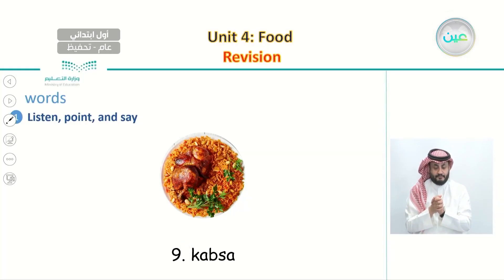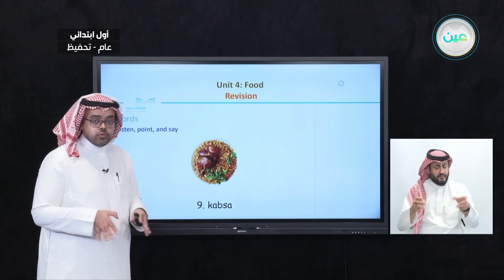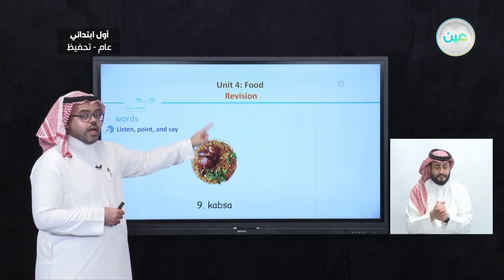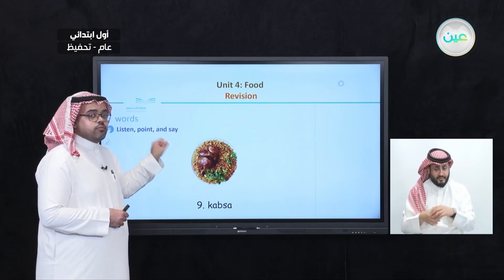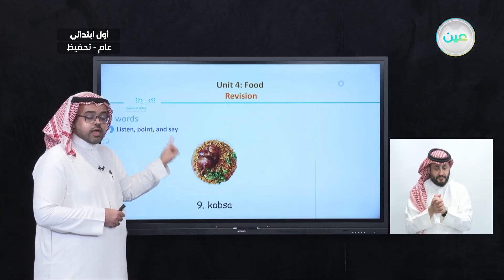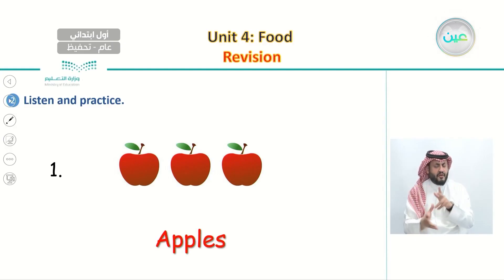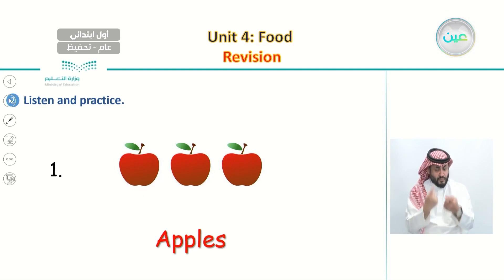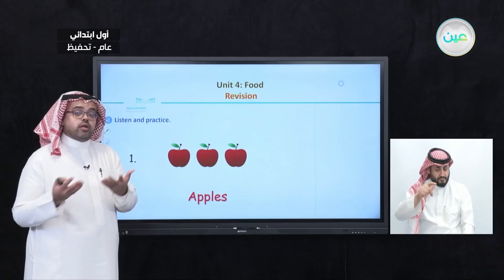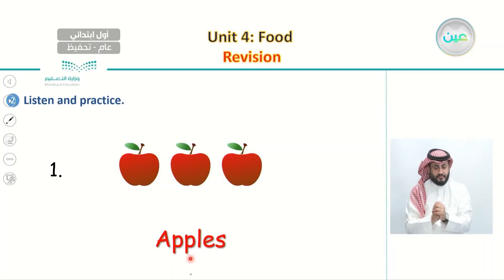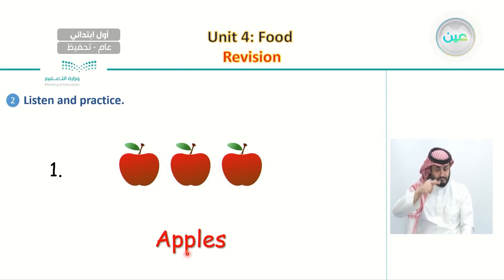So in our last lesson, we talked about different types of food. We pointed at each food and can say the name: apple, apricot, salad, soup, capsa, and different types of food. We also learned how to say more than one food. For example, this is one apple. When we have three, we say: these are three apples.